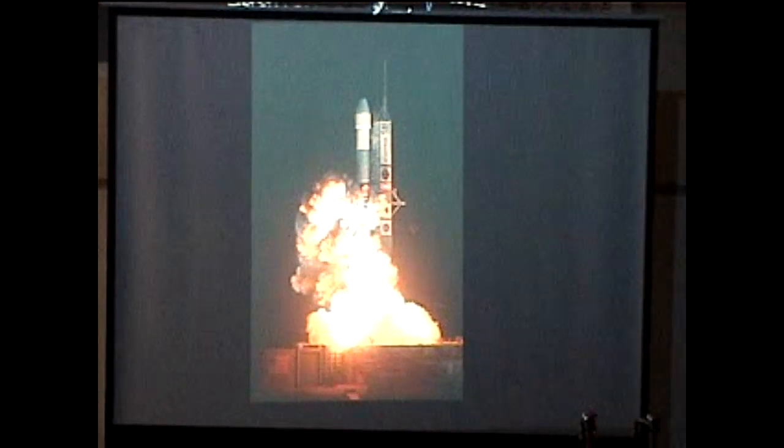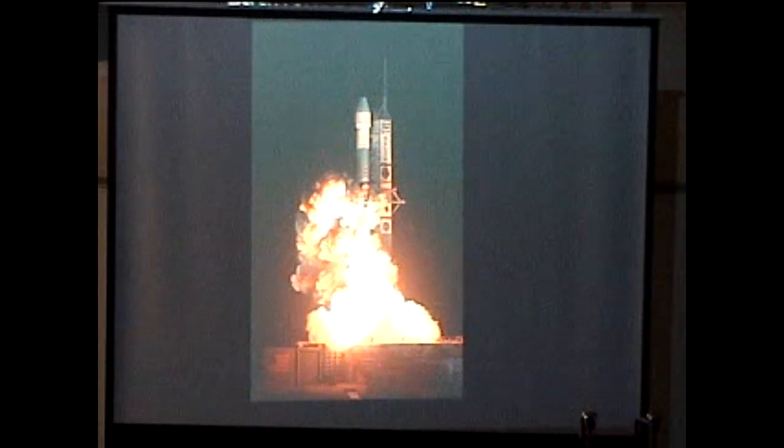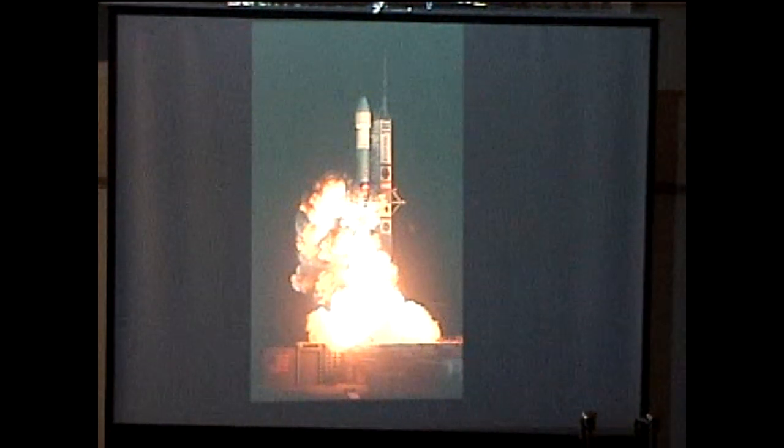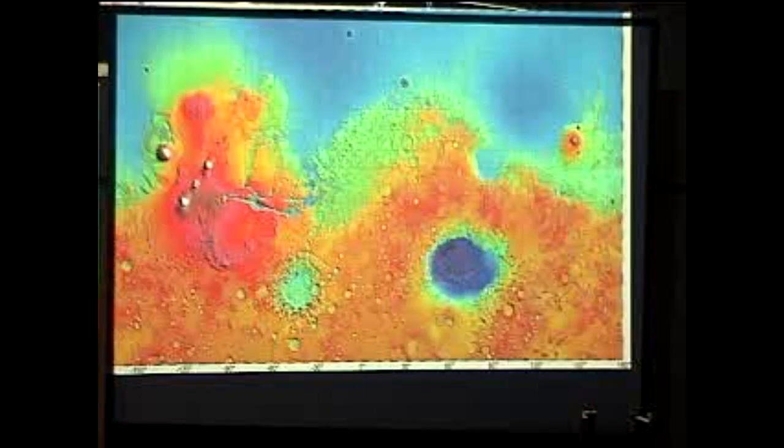Opportunity was launched on July 7th of 2003. Spirit rover was launched a month earlier. Spirit launched on a Delta II rocket. Opportunity launched on a Delta II heavy rocket. In fact, this was actually the first ever use of the Delta II heavy variant for an actual payload. The reason it had to go on the heavy variant is because its launch window was a little bit less ideal than Spirit's, so it had to get a bit of extra energy to make it to Mars. Therefore it had to use more power, hence this rocket. The first launch of the Delta II heavy carried Opportunity on July 7th of 2003.